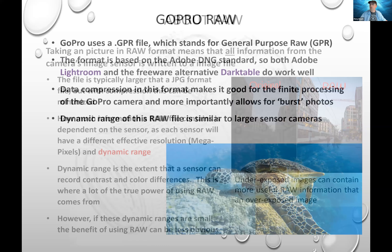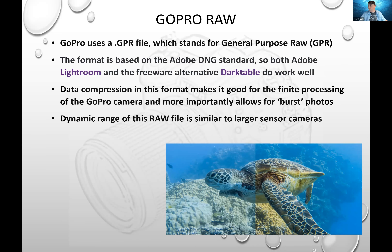Let me talk about how GoPro does raw. They use a different file extension called a GPR file — General Purpose Raw — which is an open-source file type based on Adobe's Digital Negative (DNG) standard. That means it works perfectly fine in Lightroom, but also works in the freeware alternative Darktable, which I've done presentations on in the past. They will both process it just as well.